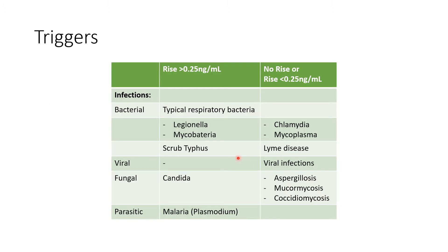What are the most effective triggers of procalcitonin induction? Typical respiratory bacteria — in LRTI, procalcitonin levels are very important as they can point to the etiology. Legionella and mycobacteria are also known to cause procalcitonin induction with a rise of more than 0.25 ng/mL. With no rise or rise less than 0.25 ng/mL, the agents include chlamydia, mycoplasma, viral infections, and Lyme disease. Most fungal infections like aspergillosis and mucormycosis, and malaria, can cause a rise of 0.25, so we have to keep these in mind as causes of false positives.